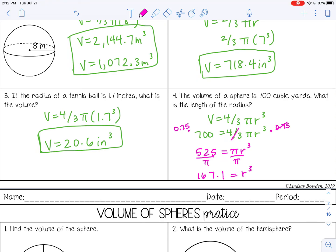And then if I want to get r by itself, I need to get rid of the cube. So I'm going to take the cubed root. And instead of typing 167.1, I'm just going to get the answer that was still in my calculator. That's going to be a little more accurate. And you get about 5.5 yards.